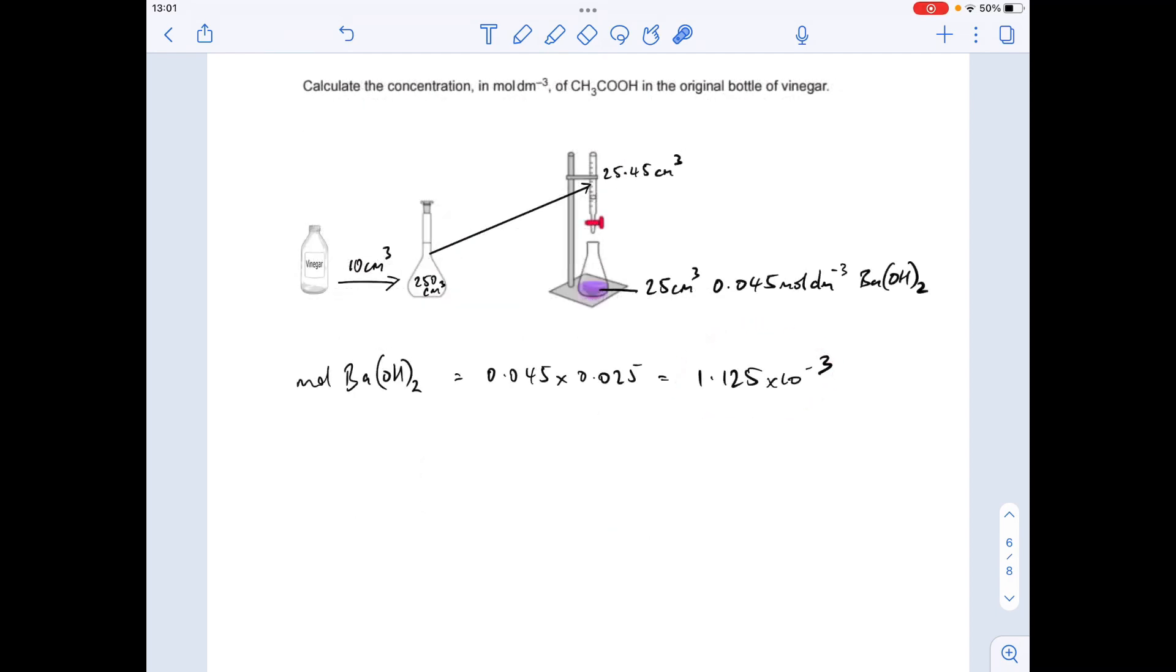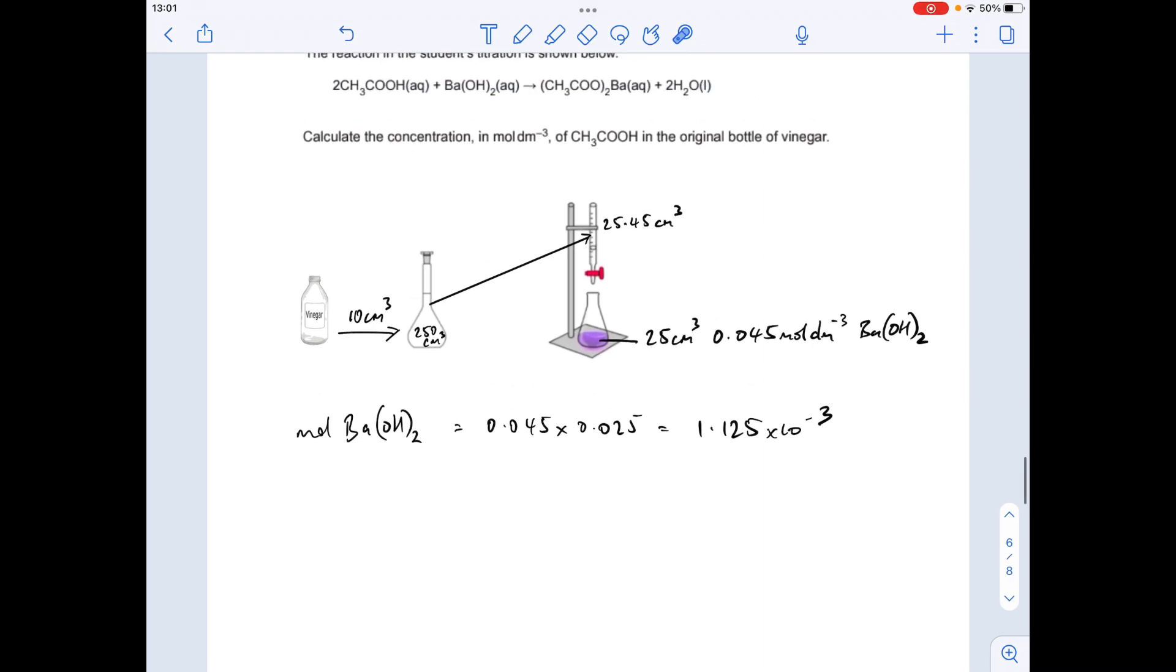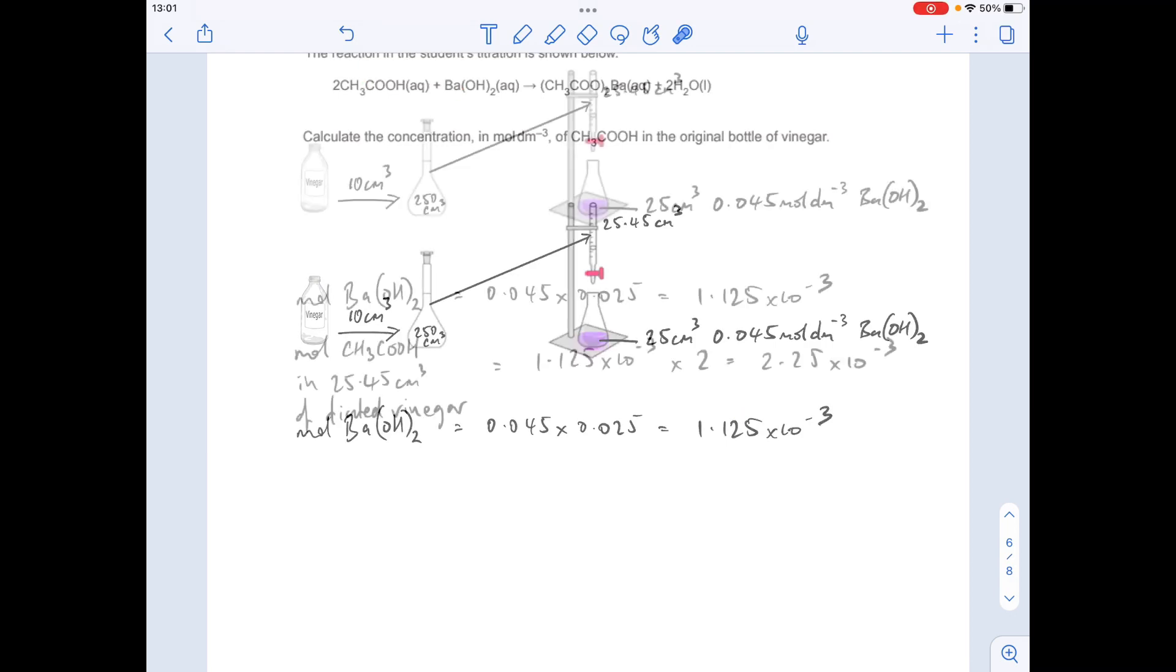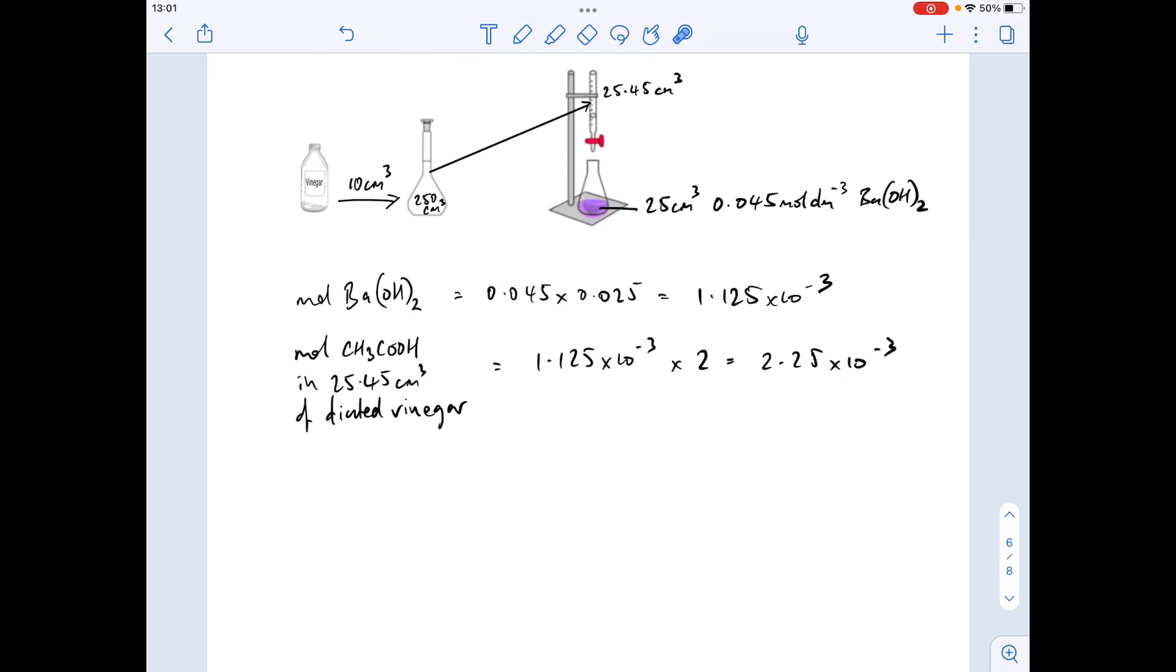So we're going to use the mole ratio now to work out how many moles of ethanoic acid must have been in this 25.45 cm³ titre. So it's just going to be double this from that one to two ratio, so that's 2.25 times 10 to the minus 3.